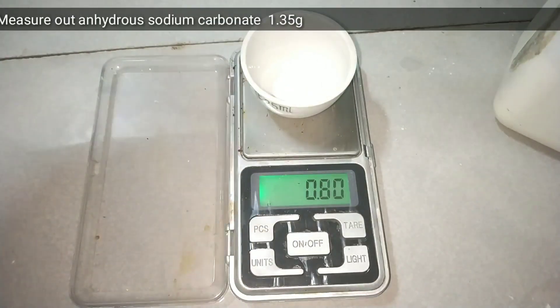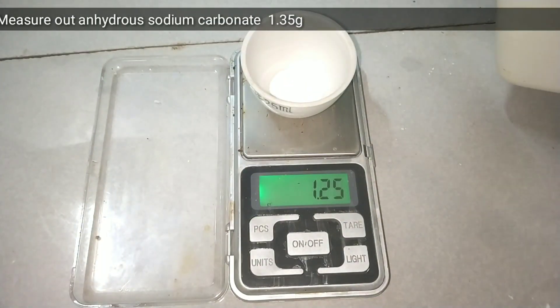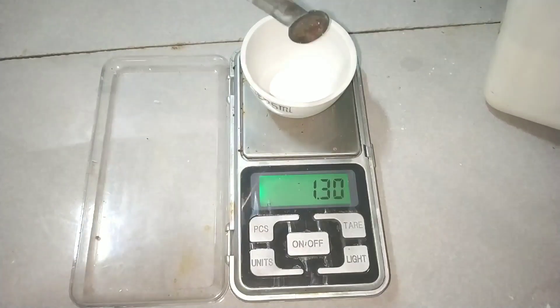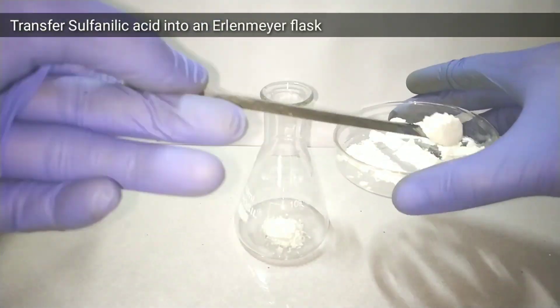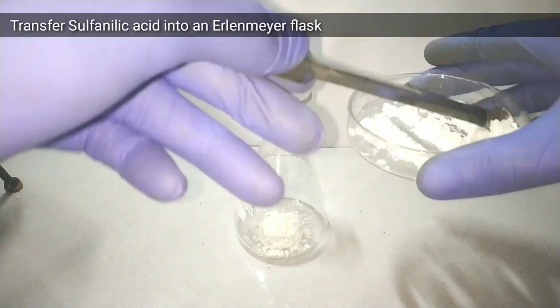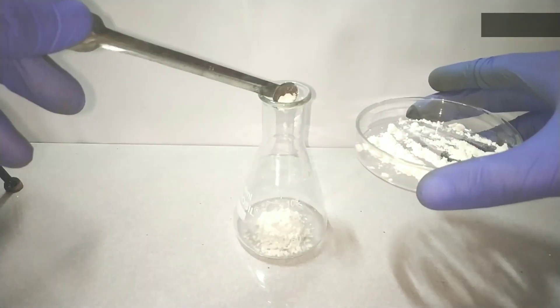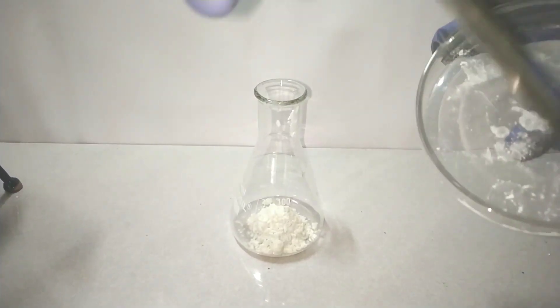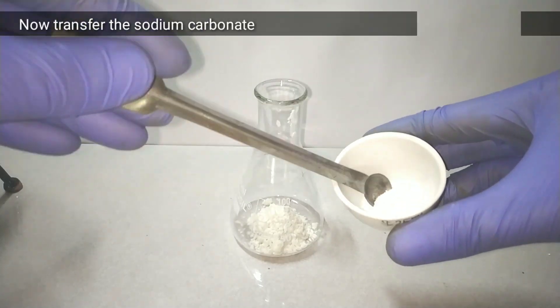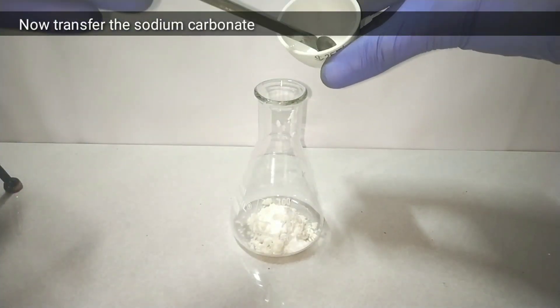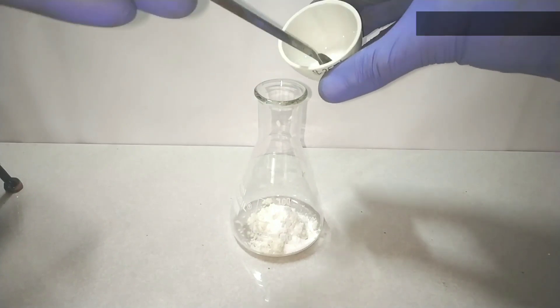Next we measure out 1.35 grams of anhydrous sodium carbonate. Sodium carbonate is available as soda ash or washing soda. Now we transfer the measured sulfanilic acid into a 100 ml Erlenmeyer flask. On top of that we add the anhydrous sodium carbonate which we just measured out.